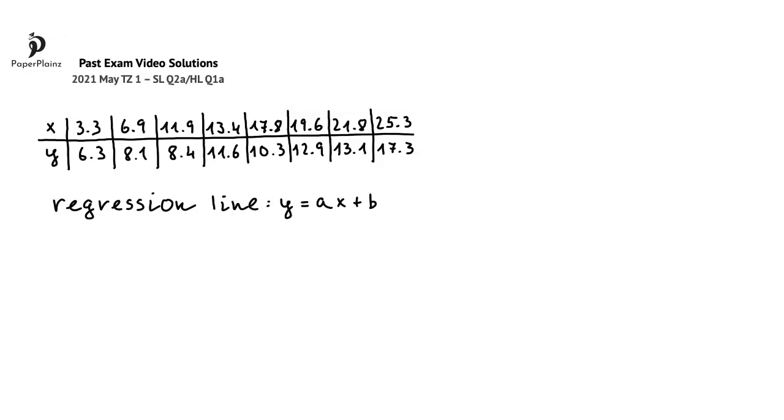In this question we are given data from an experiment, and we are also told that the equation of the regression line of y on x is y equals ax plus b. We have to write down the value of a and the value of b.